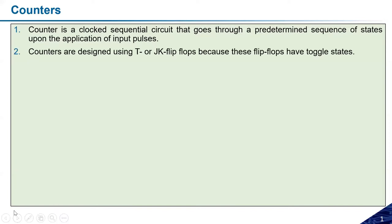For counter designing, we use JK or T flip-flops. These are important because JK and T flip-flops have the toggling property. Since clock pulses have two toggling states, and we need to measure changes in the clock pulse, a toggling kind of flip-flop is used. We cannot use RS or D flip-flops because they do not have the toggle property needed to observe state changes.